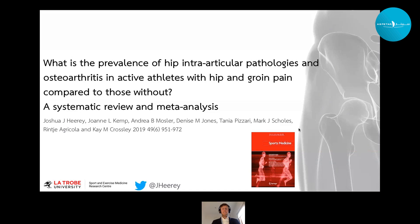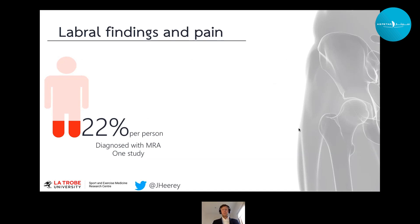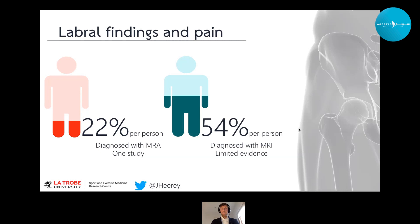After that review, we undertook a second systematic review looking at the prevalence of imaging-defined conditions in athletes — active athletes with hip and groin pain compared to those without symptoms — published in Sports Medicine in 2019. For labral tears, we found only one study reporting labral tears at a per-person level, identifying around 22% of individuals with hip and groin pain presenting to a sports medicine clinic had labral tears on MRI. We also saw a really high prevalence of labral findings in asymptomatic athletes.